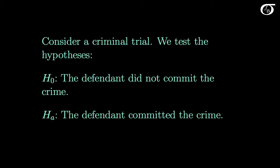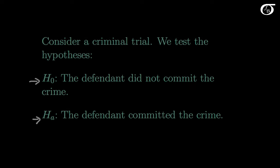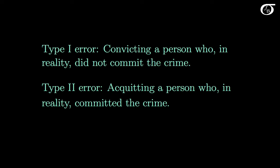Some people find it helps to compare the conclusions in a hypothesis test to the results of a criminal trial. In a criminal trial we test the null hypothesis that the defendant did not commit the crime, against the alternative hypothesis that the defendant did commit the crime. In a criminal trial we give the defendant the benefit of the doubt and use terms like innocent until proven guilty. It's similar in a hypothesis test — we will only reject the null hypothesis if we have very strong evidence against it. In a criminal trial setting, a type 1 error would be convicting a person who, in reality, did not commit the crime — in other words, rejecting the null hypothesis when it is in fact true.